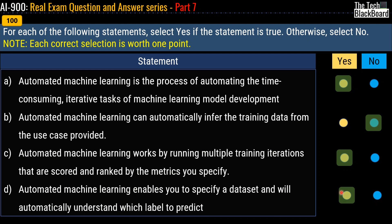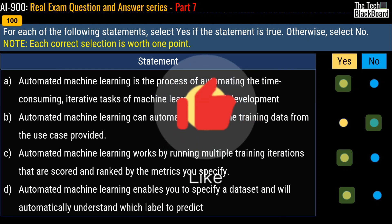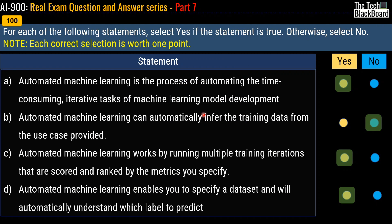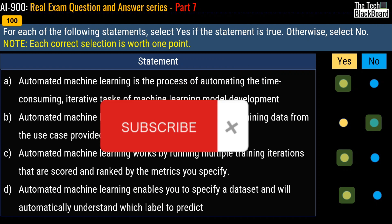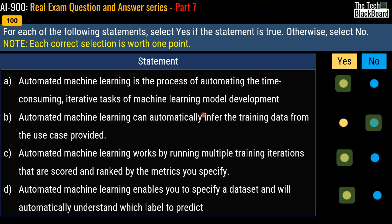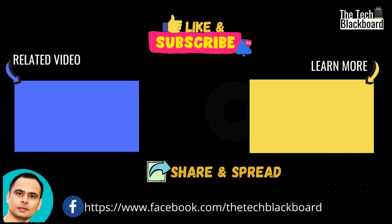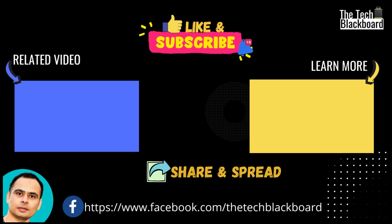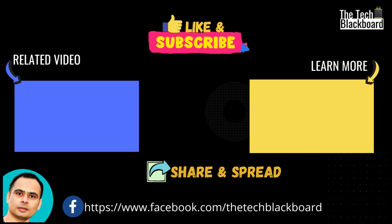If you want a detailed explanation of all these yes/no questions, let me know in the comment section and I will provide a detailed explanation for each. I hope you liked these 20 questions in Part 7 on AI-900. Please like the video — that's the only way the YouTube algorithm spreads the video to a larger audience. Subscribe to the channel as many interesting new exam series are coming. Till we meet again, stay fit, keep learning, and thanks for watching.